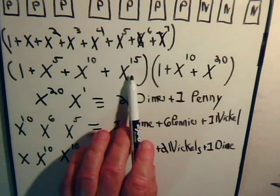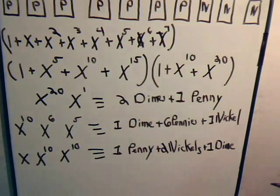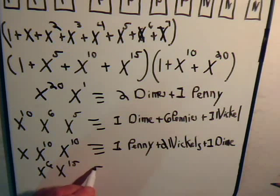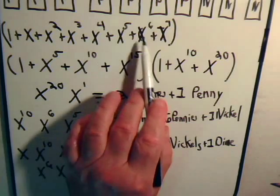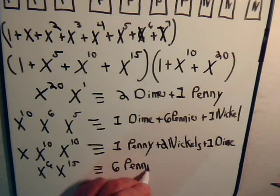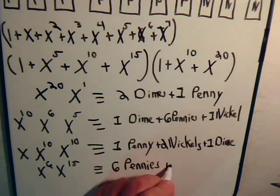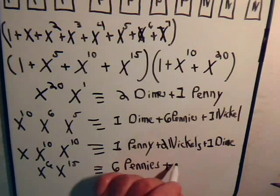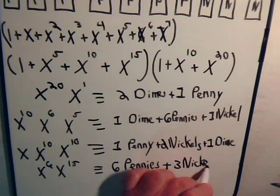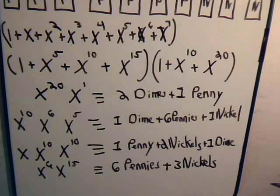Here we have x to the 15. We can multiply that by x to the 6. And that's six pennies there, plus x to the, that's three nickels. And there's nothing else that really jumps out. I think we've exhausted our repertoire.